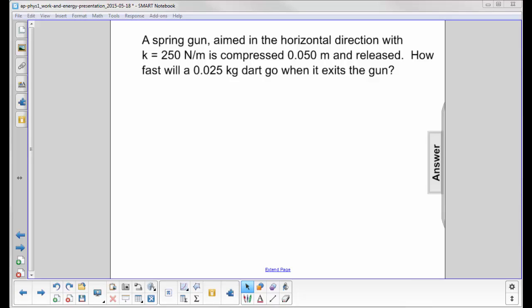A spring gun aimed in the horizontal direction with k equals 250 newtons per meter, that's the spring constant, is compressed 0.050 meters and released. How fast will a 0.025 kilogram dart go when it exits the gun?